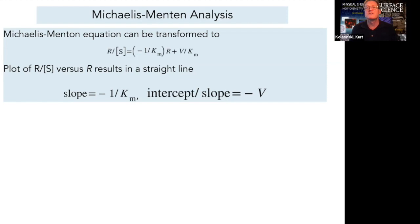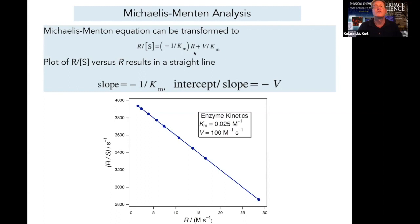As always in physical chemistry, we love to linearize our equations. We can linearize the Michaelis-Menten equation by dividing through by the concentration of the substrate, and it transforms the equation into this form, which, if we then plot R over S versus R, we're going to get a straight line with a slope of minus one over the Michaelis constant, and the ratio of the intercept to the slope will be equal to minus V. There's some typical data that you might expect.